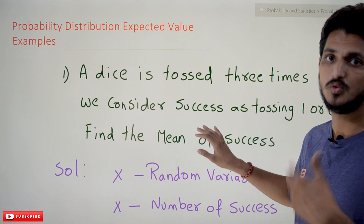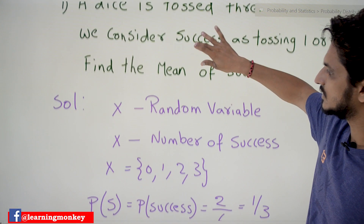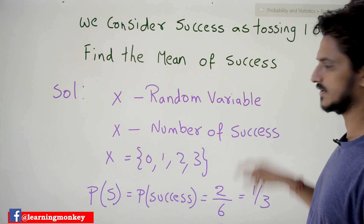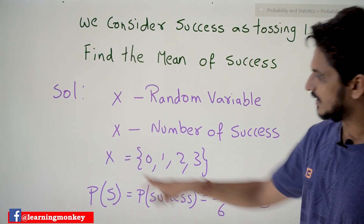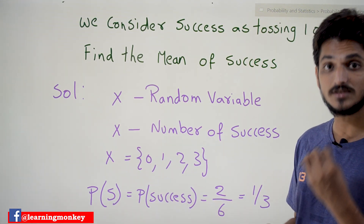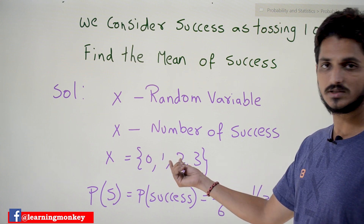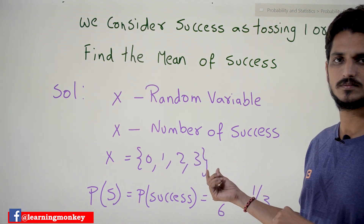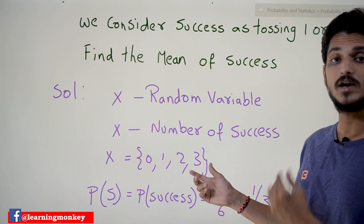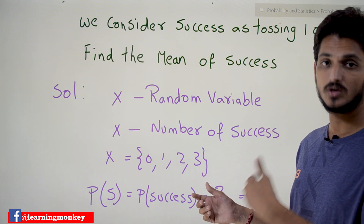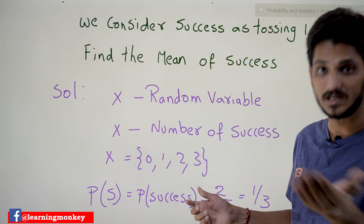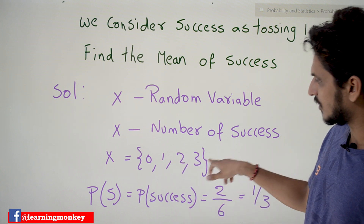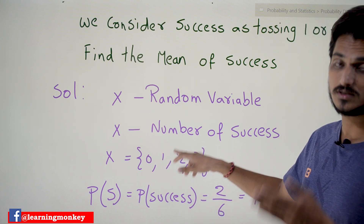Let's take our random variable X as the number of successes. Since we are tossing the dice three times, the number of successes can be zero, one, two, or three. For this we have to find the mean of the success — that is what expected value means. So first we have to find the probabilities of zero, one, two, and three successes.